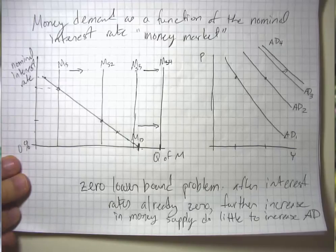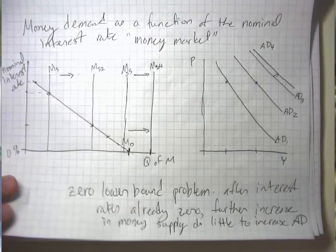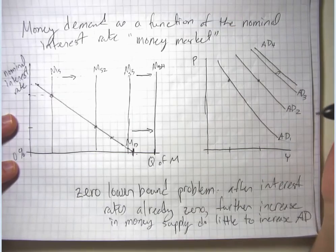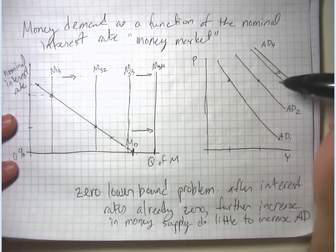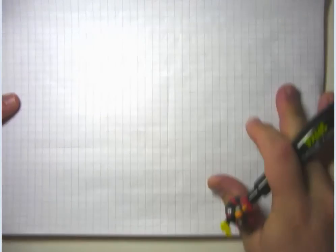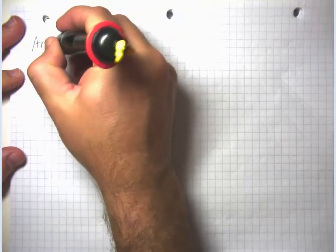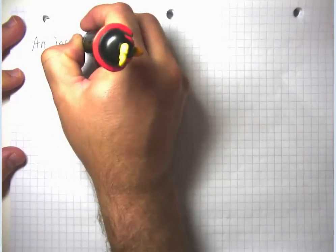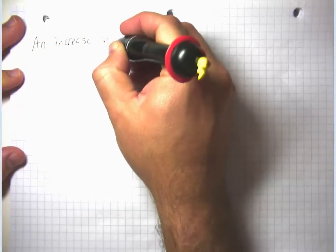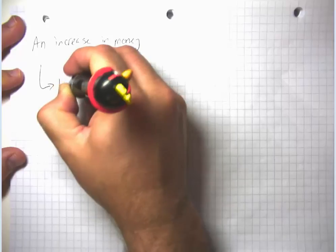All right. So that's the overall idea of monetary policy. Monetary policy is the idea that we can use a change in the money supply to influence the level of aggregate demand. In that last slide, you saw that an increase in money supply causes lower interest rates.